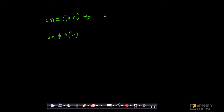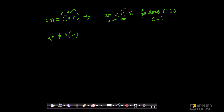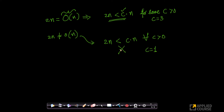However, 2n is small-O of n². Let us understand why. n² grows much faster than n. If I divide both sides by n, I have 2 on this side and c·n on the other side. For any value of c I choose, I can find an n₀ that satisfies the condition.